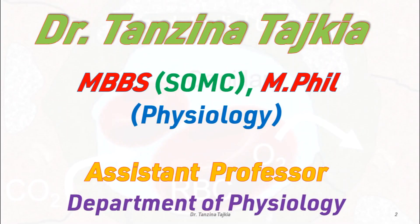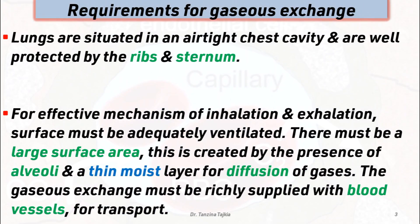Today's lecture is about transport of oxygen. First, we must know about the requirements for gas exchange. Lungs are situated in an airtight chest cavity, well protected by ribs and sternum. For effective mechanism of inhalation and exhalation, the surface must be adequately ventilated, there must be a large surface area created by the presence of alveoli, and a thin moist layer for diffusion of gases.